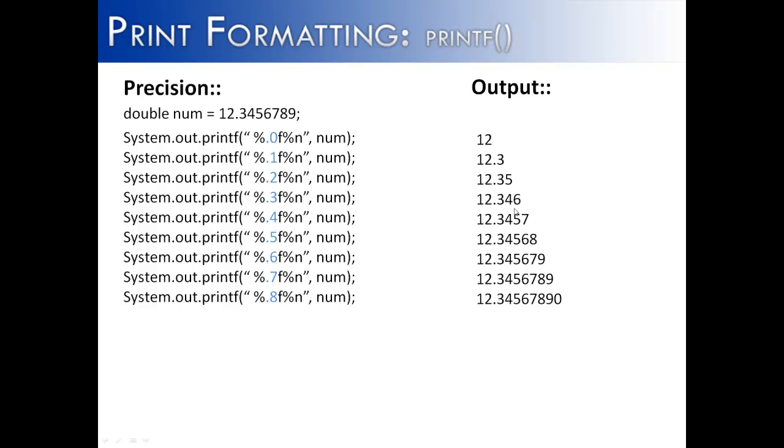Now you can notice that the number is changing. It is not 12.345 as it is up here, it's 12.346. The reason is, if the number right here that would have been right here is higher than or equal to five, it will round this number up. We can see that happens all the way down this list.